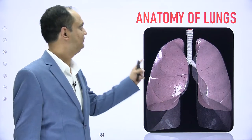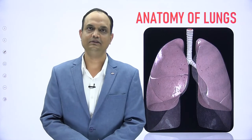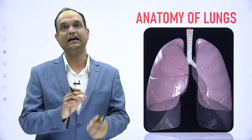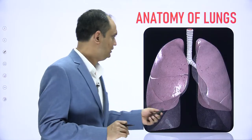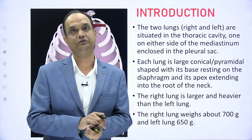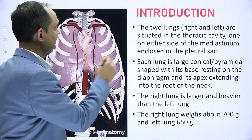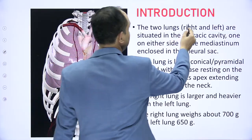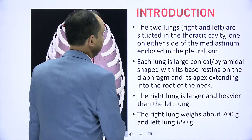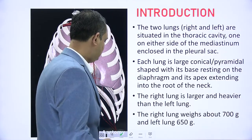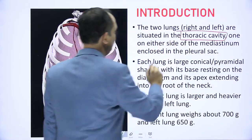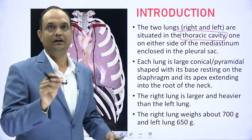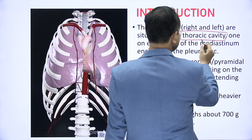Hello students, today we will discuss the anatomy of lungs. In today's lecture we discuss the gross features and how to identify the side in your exam. The lung is a paired organ; there are right and left lungs situated in the thoracic cavity, one on either side of the mediastinum, enclosed in the pleural sac.